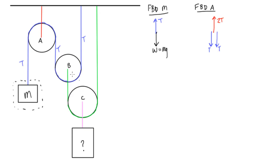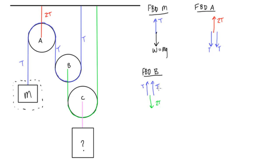Now let's do the free body diagram for pulley B. We have two blue ropes pulling up on this object — tension T and tension T — because the tension is always the same in this rope. Then we have one tension in the green rope pulling down. The tension in the green rope also has to be 2T, otherwise it won't cancel out the two T's pulling up, and pulley B wouldn't be in static equilibrium. And since it's one single rope, the tension pulling up on the other side is also 2T.